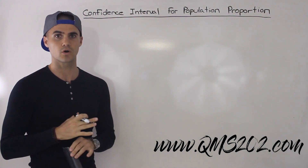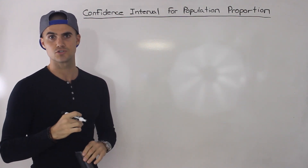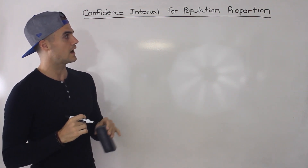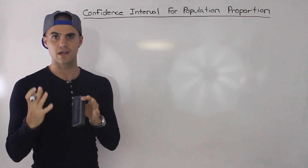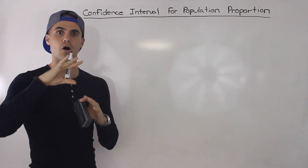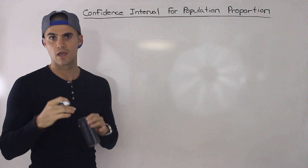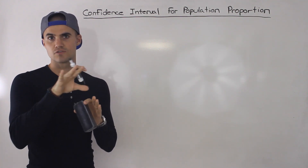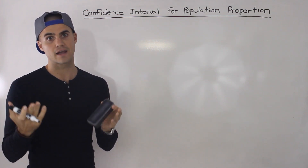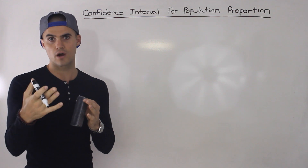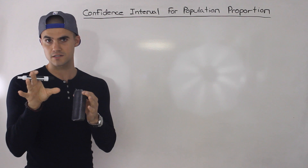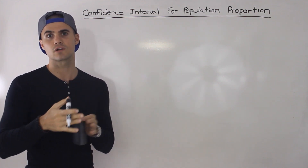Proportion is a lot easier to work with — there are going to be fewer parameters. When I'm talking about a proportion, I mean basically the percentage of items in a population that share a common characteristic. For example, you might look at all homes in a population and want to see what percentage have a two-car garage, or look at a factory and see what percentage of products contain a defect.